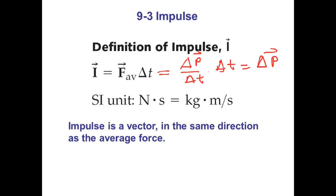Next, I define an even more useful physical quantity called impulse, and it's a vector. The impulse is the force acting on an object or system multiplied by delta T — the duration of that force acting on the object. So F times delta T is defined to be the impulse acting on the system or object.